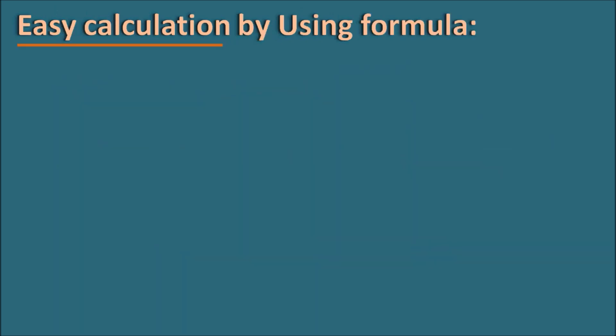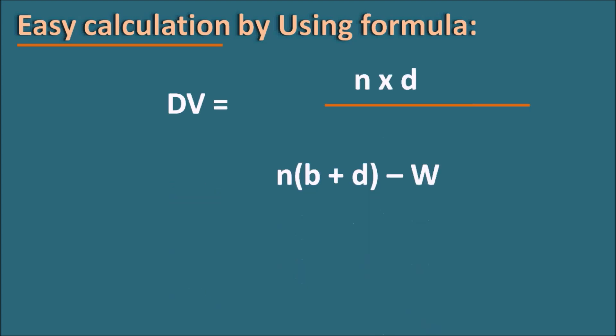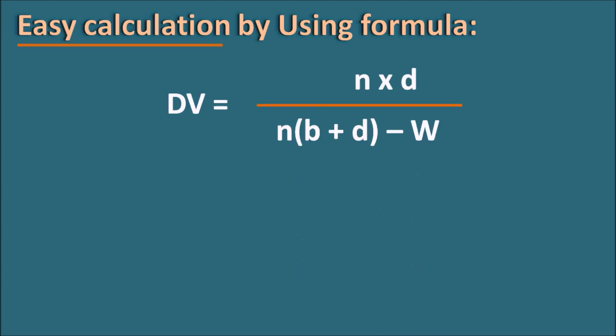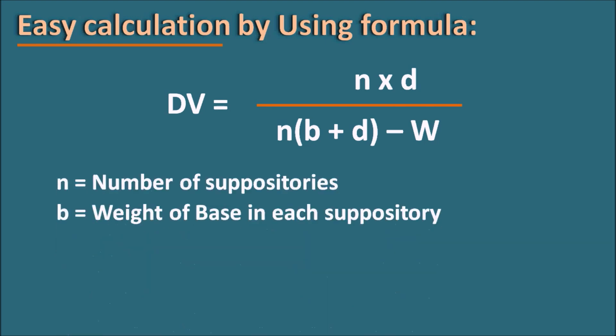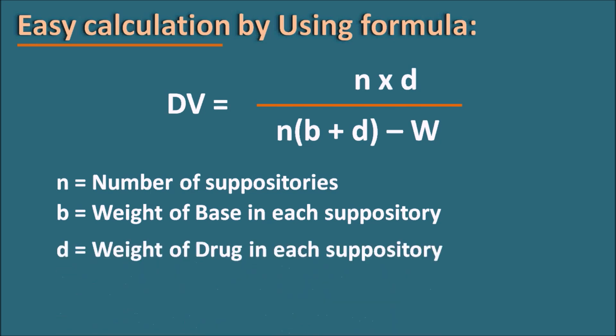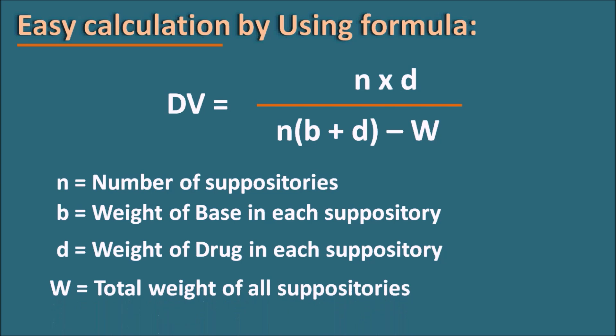Now let us see how to calculate the displacement value easily using a formula. The formula is: Displacement Value = (n × d) ÷ (n × b + d − w), where n is the number of suppositories, b is the weight of base per suppository, d is the weight of drug per suppository, and w is the total practical weight of all suppositories.